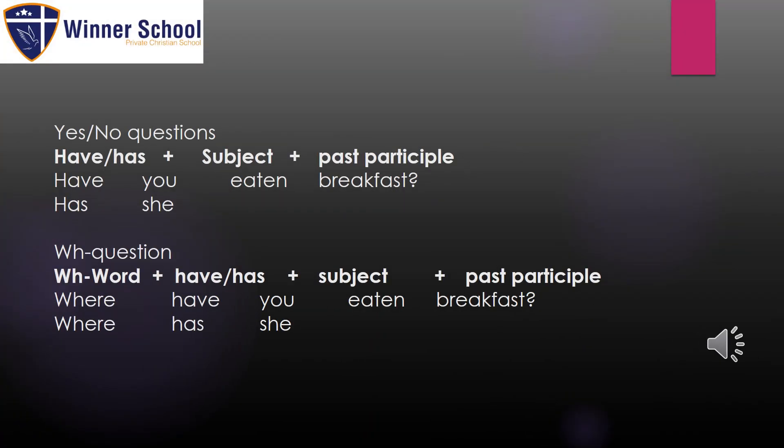The same way we have in this chart, the formula for yes/no questions is: have or has, plus subject, plus past participle. For WH-questions, we have: a WH-word, plus have or has, plus subject pronoun, plus past participle.